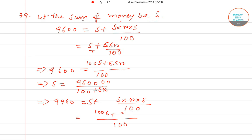Simplifying the second equation further, we get S = 496000 / (100 + 8r). Now we equate the two expressions for S.